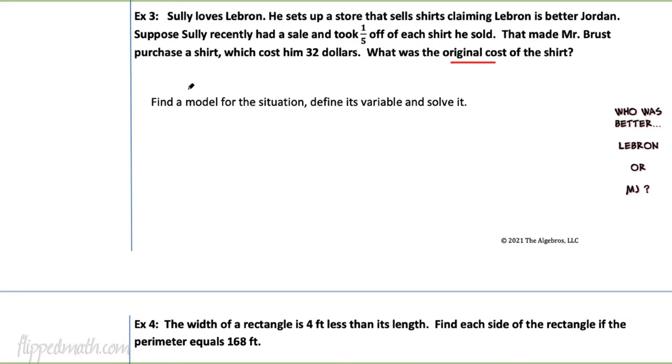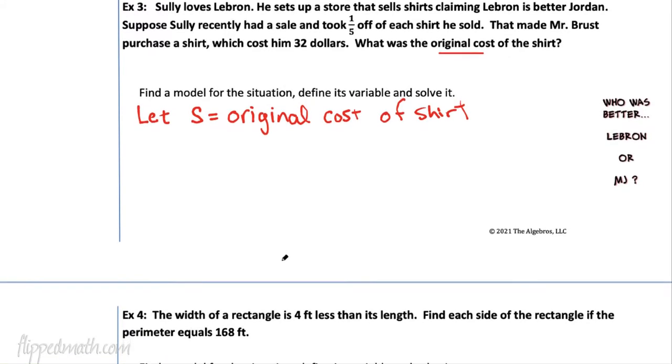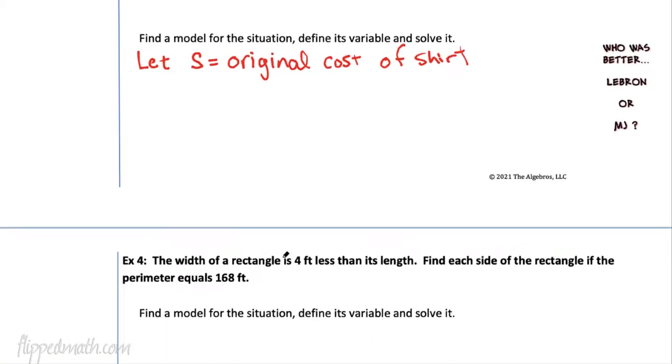So to model this, I'm going to let, I don't like using S but here I will use S. I don't like it because it looks like 5s, but I will use an S here if we're careful. So let's write down, let S be the original cost of the shirt. And then next, so he has the cost of the shirt, that was S. But then he took away a fifth of it, right? He took a fifth off. So there's a 5, here's an S, be careful. And all of that when Mr. Brust bought the shirt was $32.